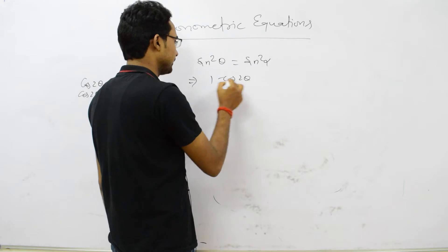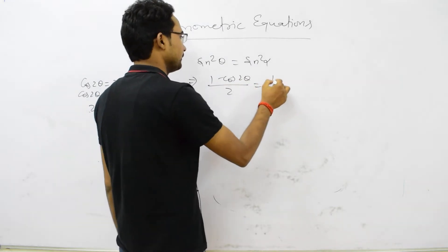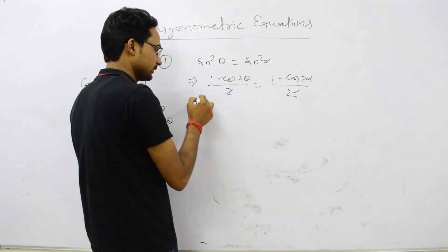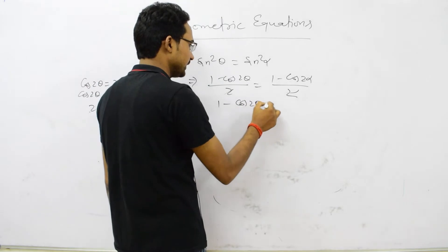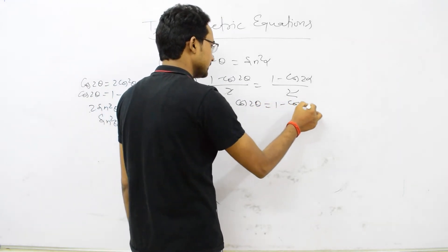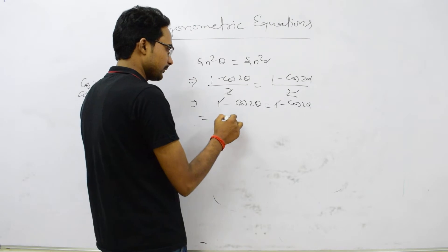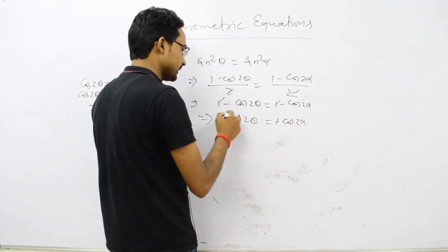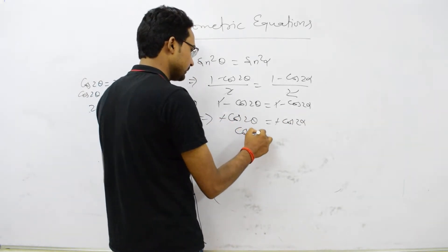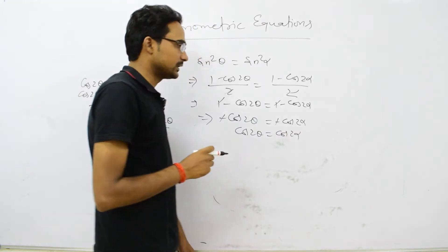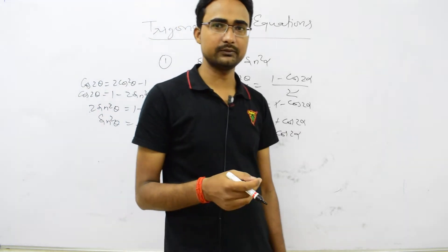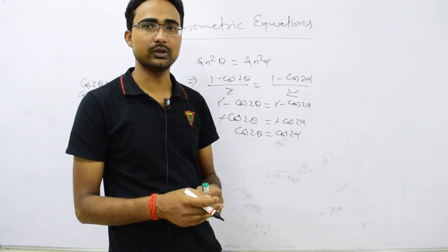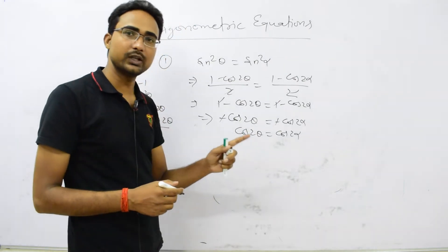Substituting, we get (1 − cos 2θ) / 2 = (1 − cos 2α) / 2. The 2s cancel, giving 1 − cos 2θ = 1 − cos 2α. The 1s cancel, so cos 2θ = cos 2α. Using the formula for cos θ = cos α, we get θ = 2nπ ± α.